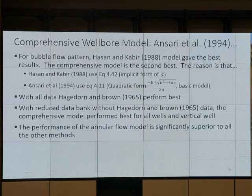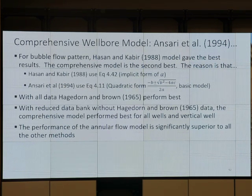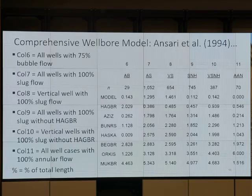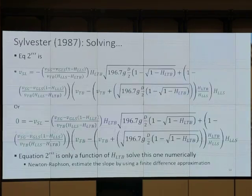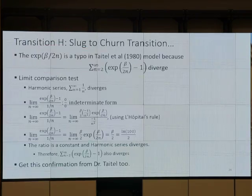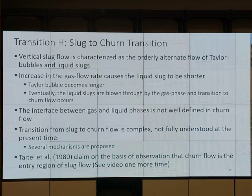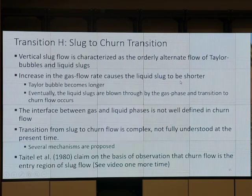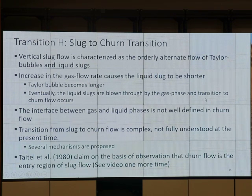Then we talk about flow at any other angle other than perfect 90 degrees or perfect zero. Now — Transition H. Slug flow is characterized as alternating flow of Taylor bubble and liquid slug. Increasing gas flow rate causes the slug to be shorter, the Taylor bubble to become longer. Eventually, the gas slugs are blown through by the gas phase and transition to churn flow occurs.